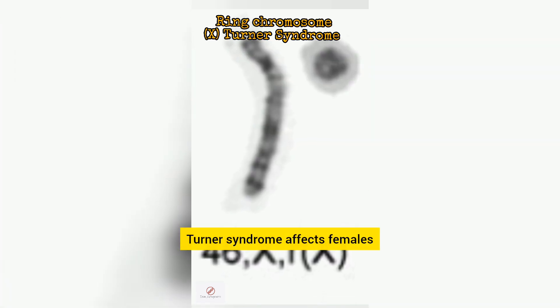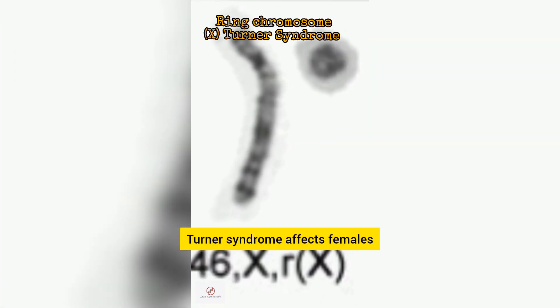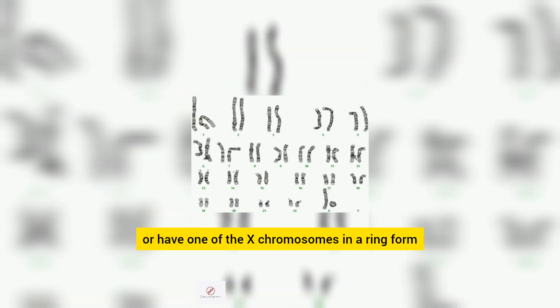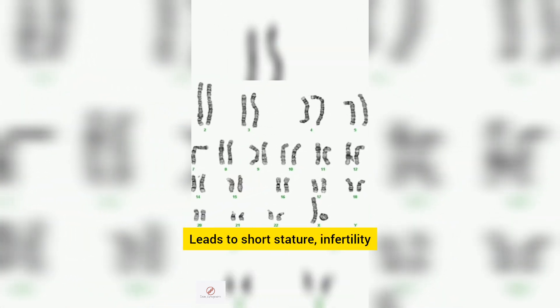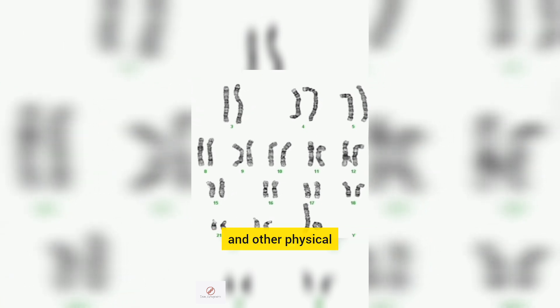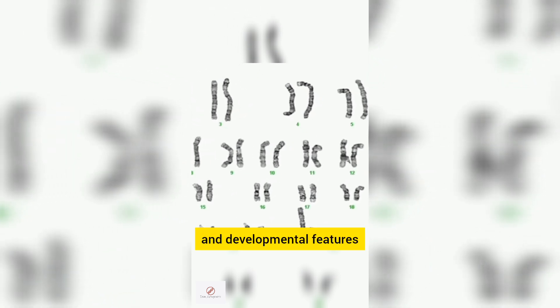Turner syndrome affects females who are missing an X chromosome or have one of the X chromosomes in a ring form. It leads to short stature, infertility, and other physical and developmental features.